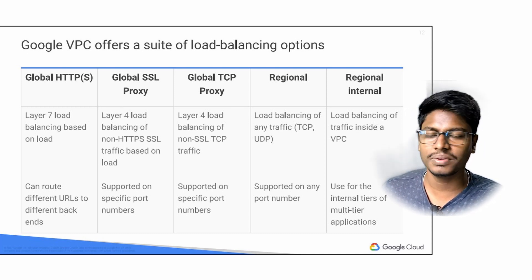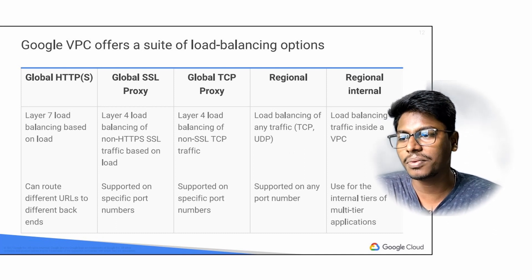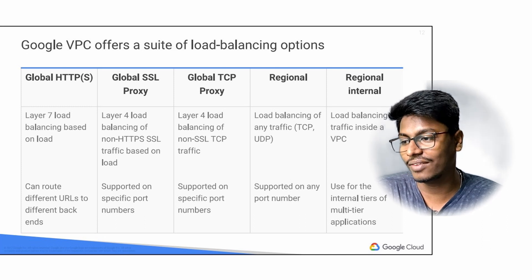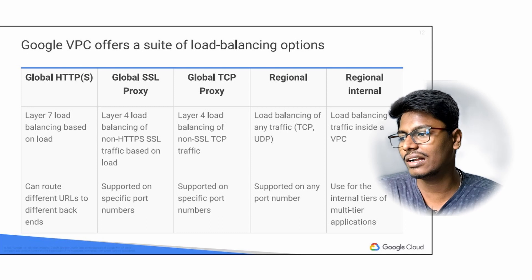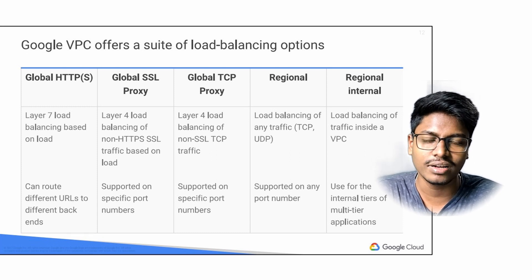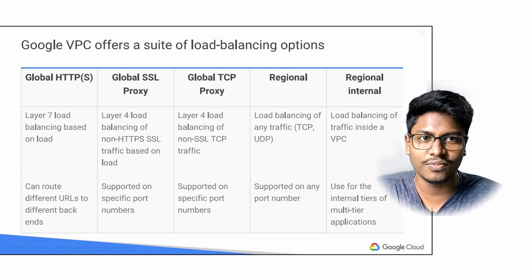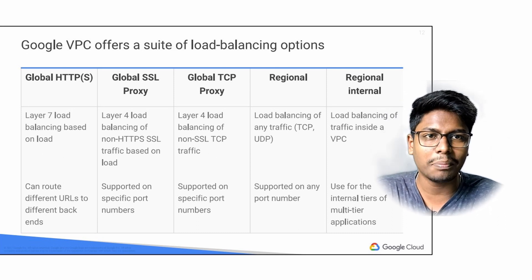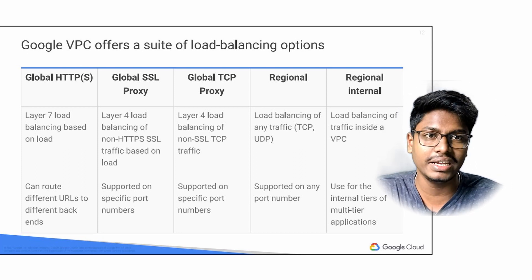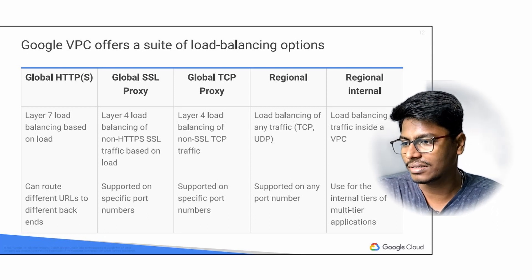You can also use the load balancing options: global HTTPS, global SSL proxy, TCP proxy, regional, and regional internal. These cover Layer 7 and Layer 4 load balancing. Layer 4 is hardware load balancing at the TCP packet level. Layer 7 is application-level — it analyzes requests based on what you are sending. If you look at the OSI 7 layers, you can discuss this in detail. These are the load balancing options available from Google.